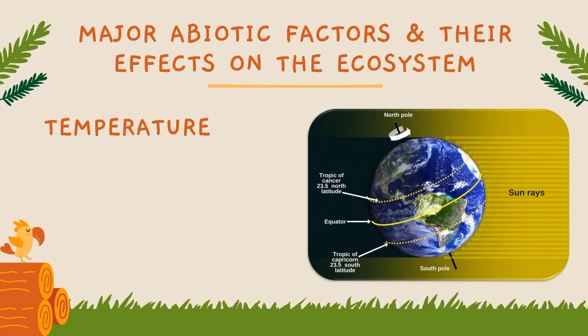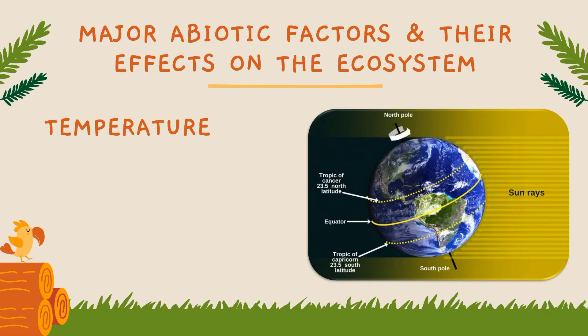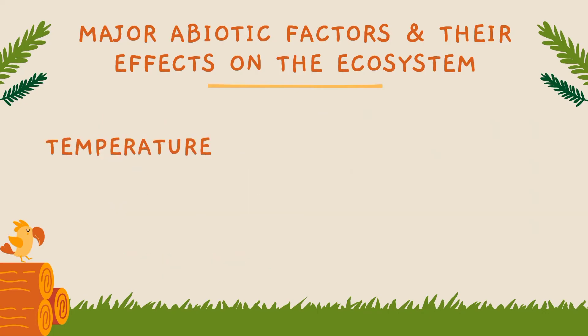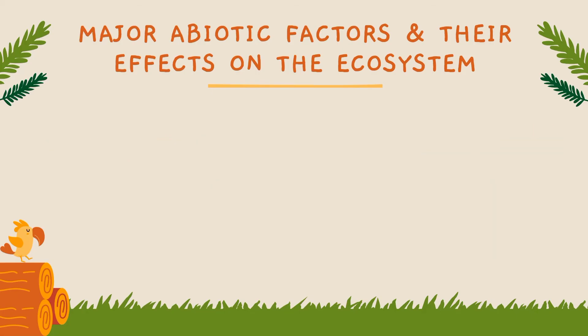Next is temperature. All organisms are adapted to survive between a minimum and maximum range of temperature. The Earth's surface has different temperatures in different areas. Some animals and plants can bear extreme cold, and some survive well in moderate temperature. Due to climate change, the average global temperature increases. High temperature causes damage not only directly by heat, but also because it is usually accompanied by low humidity and drought. Plants will also be damaged if the temperature drops to 0 degrees Celsius.